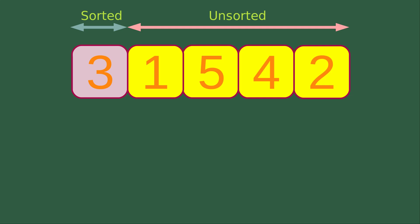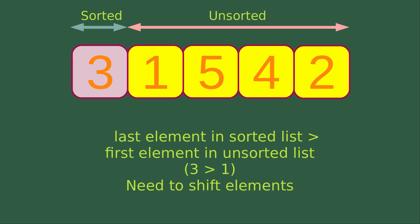Let us see an example to understand the process of insertion sort. Suppose I have these five numbers. In the first step, the first element is regarded as a sorted element in the sorted list, and the remaining elements will be treated as unsorted. Now I would like to check the following condition: the last element in the sorted list is larger than the first element in the unsorted list.